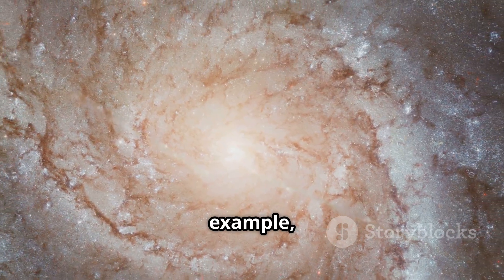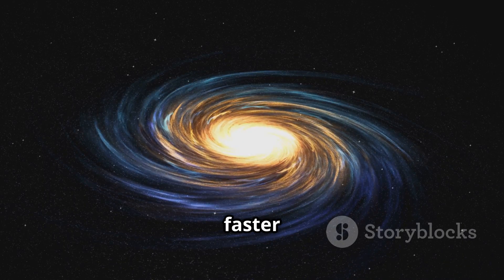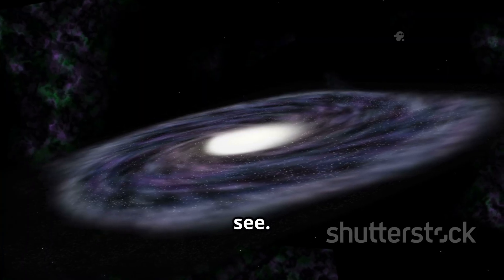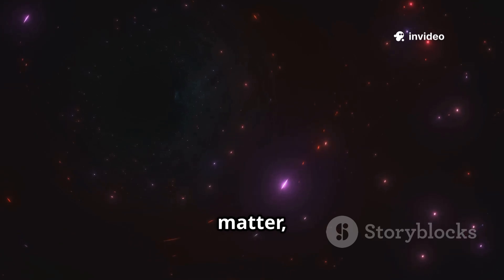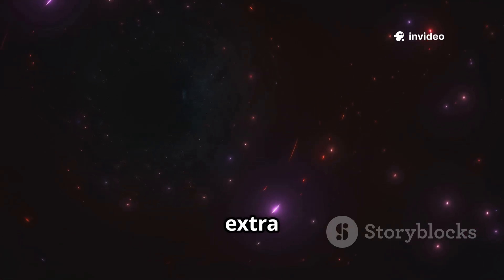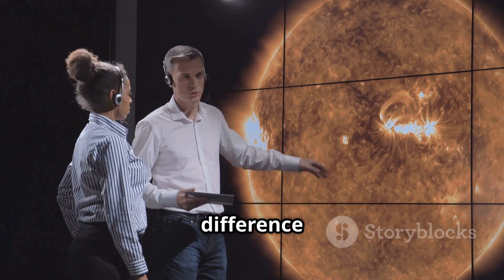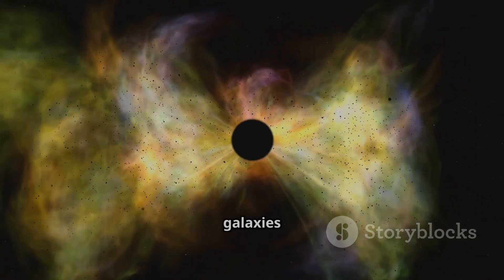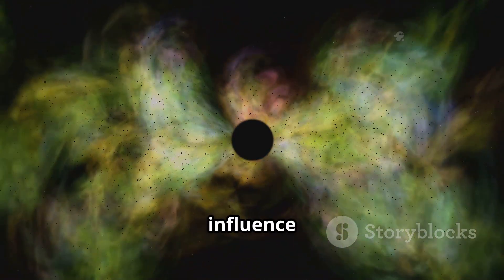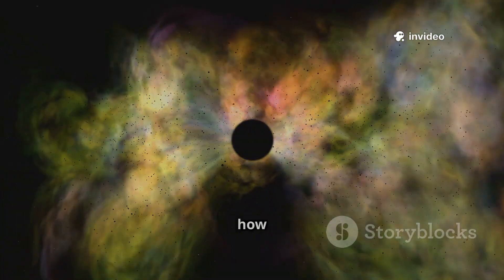For example, astronomers see that galaxies spin faster than they should, based on the visible matter we see. To explain this, we came up with the idea of dark matter, an invisible substance that gives extra gravity. But what if some of this difference is due to heat effects? Maybe huge clouds of hot gas in and around galaxies have a different gravity influence than we calculate, slightly changing how galaxies spin.